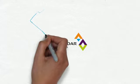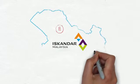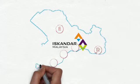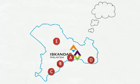is a region in Southern Johor established in 2006. It has five different flagship zones, namely Johor Bahru City Centre, Nusajaya, Western Gate Development, Eastern Gate Development, and Senai-Skudai.